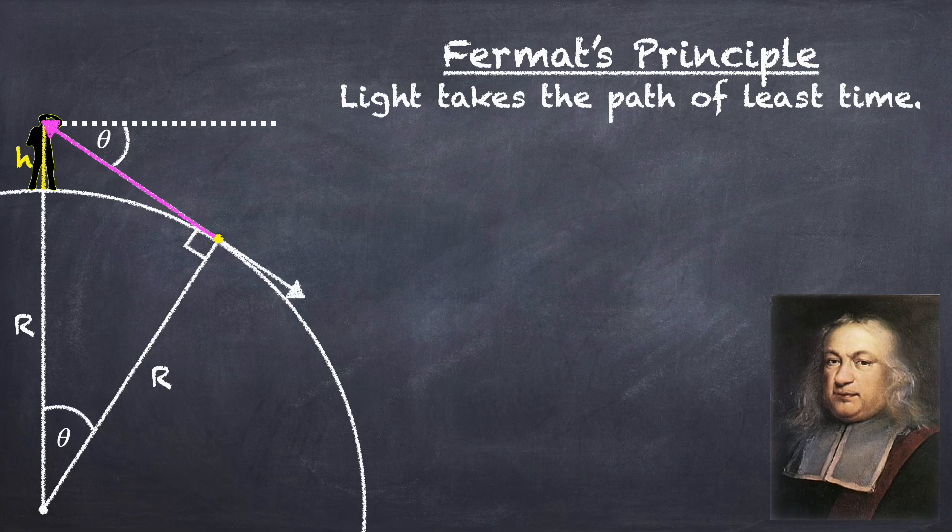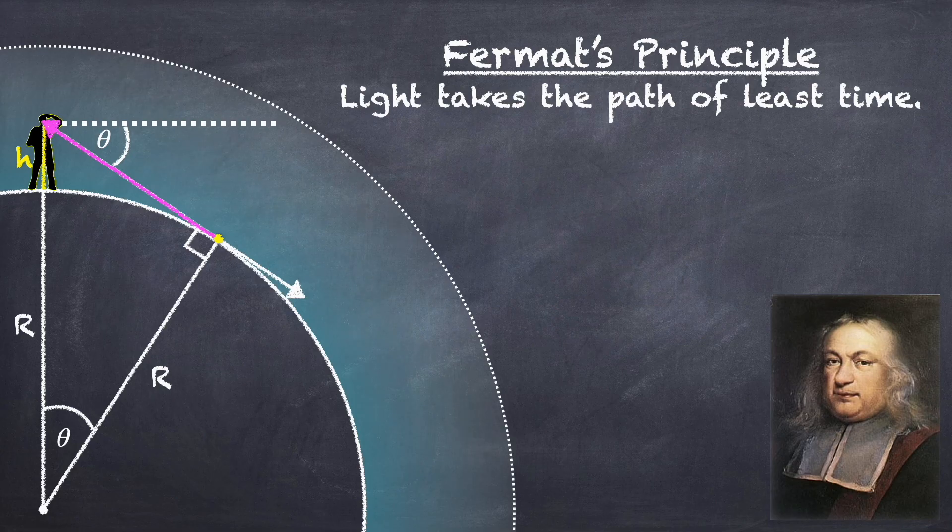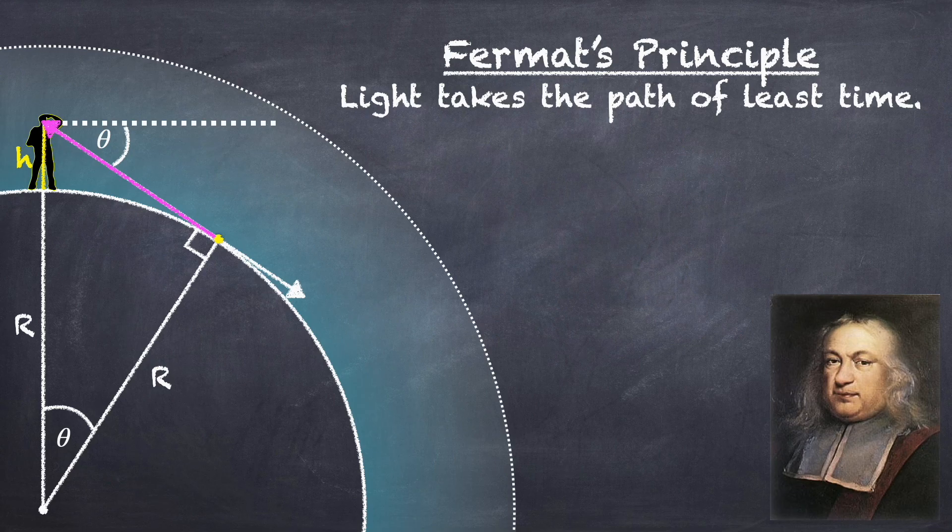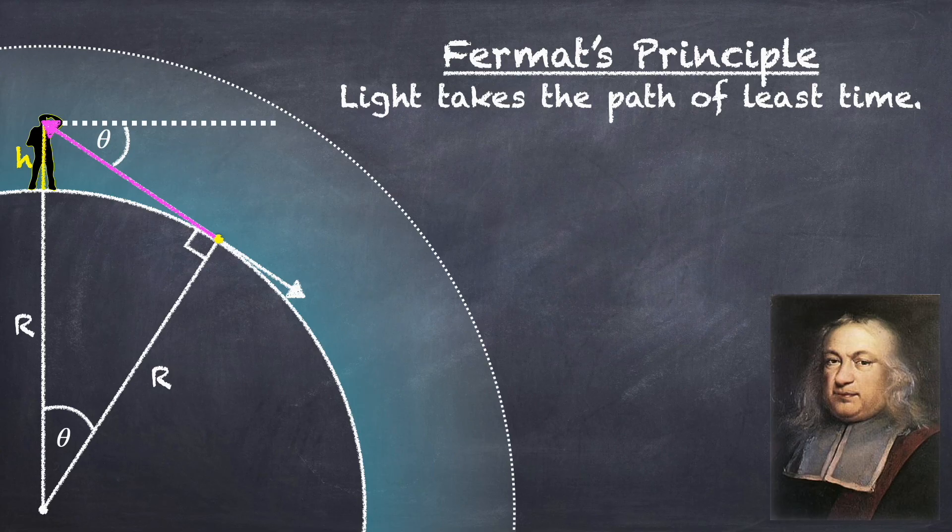And in our case, because the Earth is surrounded by an atmosphere whose density decreases with height, the speed of light is faster at higher elevations. And so that means that in order to minimize time, light would prefer to spend more of its trajectory at higher elevations where it can go faster.